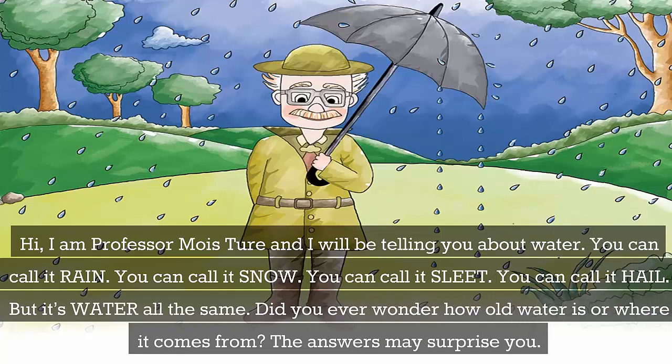You can call it rain. You can call it snow. You can call it sleet. You can call it hail. But it's water all the same. Did you ever wonder how old water is or where it comes from? The answers may surprise you.